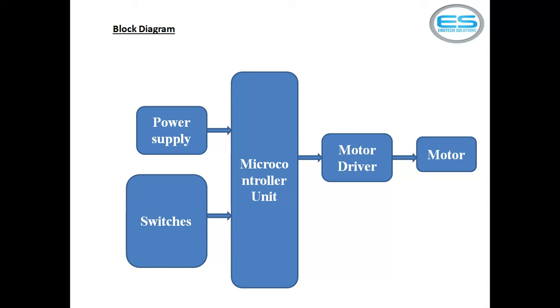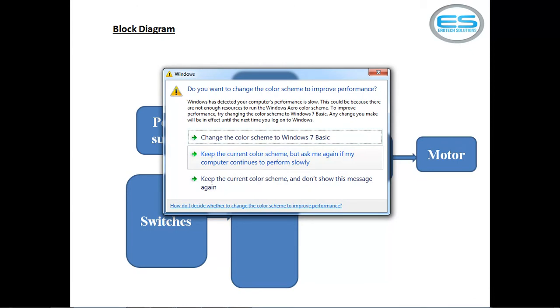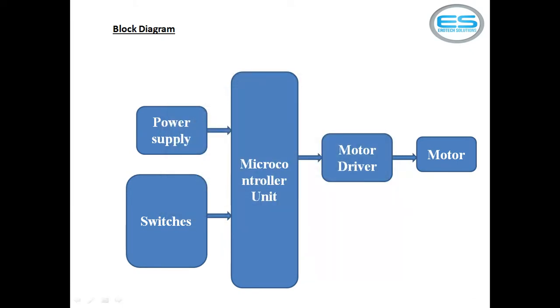I will explain individual blocks. Power supply is used for AC to DC conversion. For AC to DC conversion, you need to use one bridge rectifier, filters, and regulator. Bridge rectifier converts AC to pulsating DC, but this is not pure DC. This pulsating DC is filtered through electrolytic capacitors.